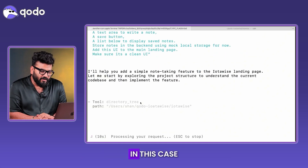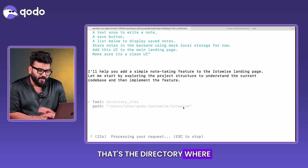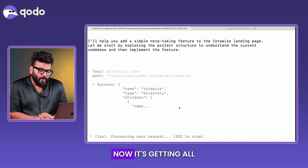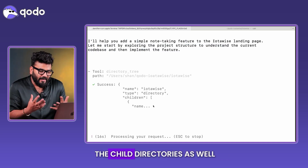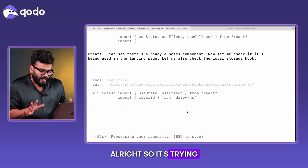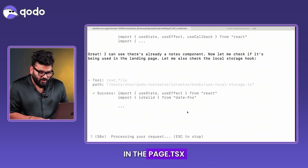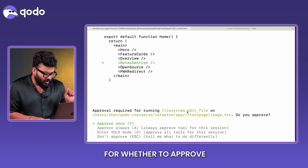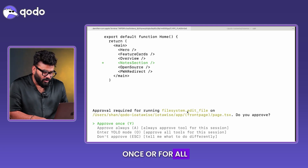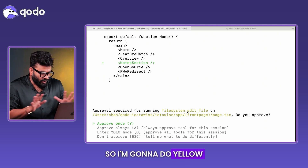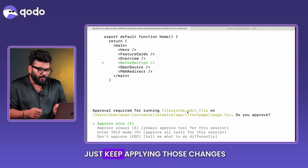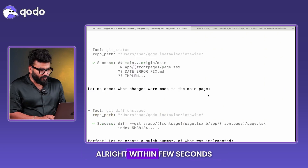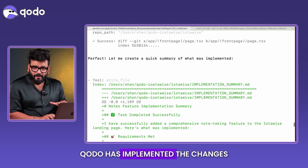It starts scanning the directory — that's the directory where the codebase is — and gets all the child directories. It's trying to make some changes in the 'page.tsx' file. It asked whether to apply changes once or for all, so I selected 'always' so it can just keep applying those changes.